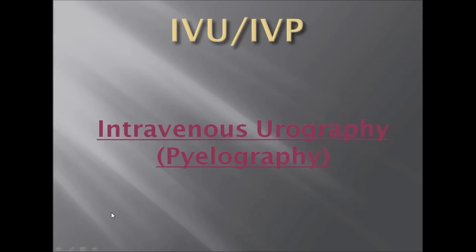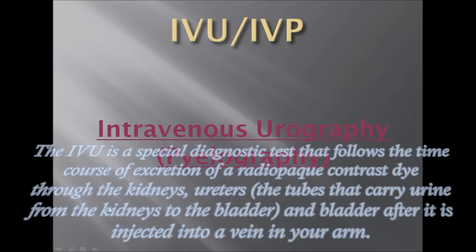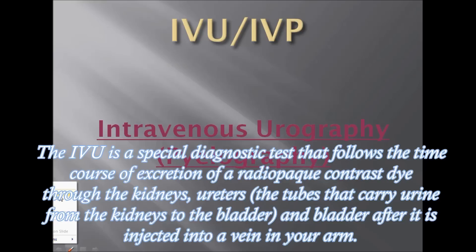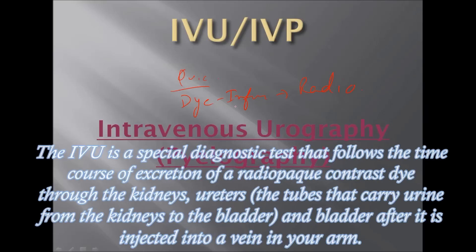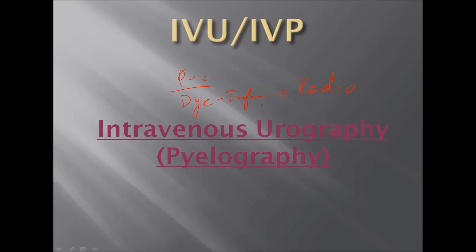Hello friends, welcome to the video. Today we are going to talk about IVU/IVP, that is intravenous urography or pyelography — it's known by both names. It's basically a dye infused radiograph taken at certain intervals. The dye injected acts as a radiopaque material which helps us to track the flow of urine in the kidney, ureter, and bladder region.